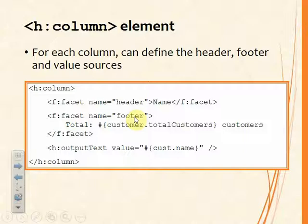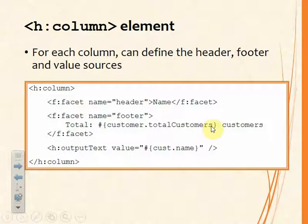The 'footer' facet will appear at the bottom of the table after all the content columns have been displayed. So for one column we'll have a header, an undefined number of rows depending on how big the collection is, and then a footer row. The footer can combine a literal string with a variable — for example 'total: ' followed by a value extracted from the managed bean, followed by ' customers'.